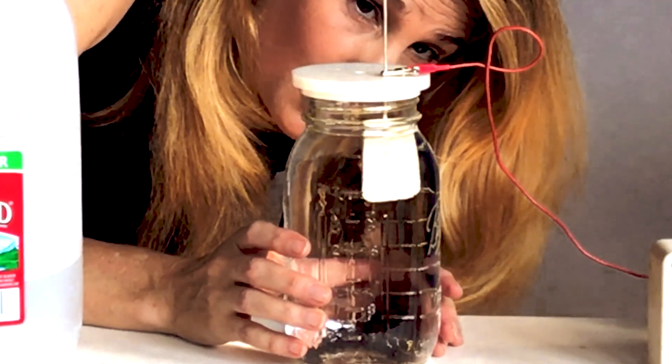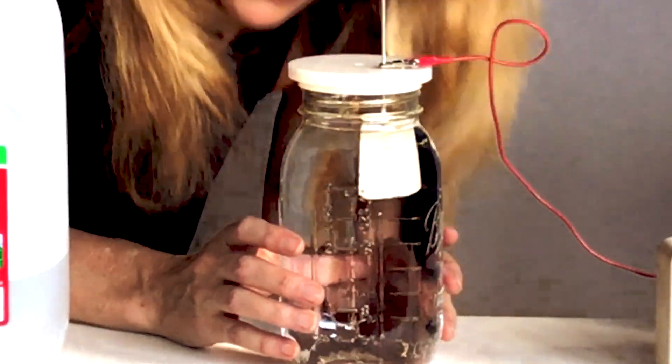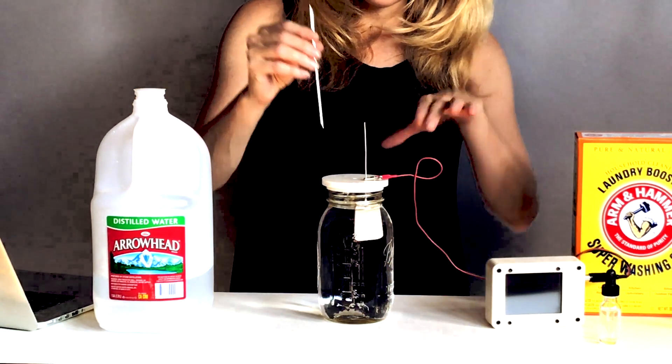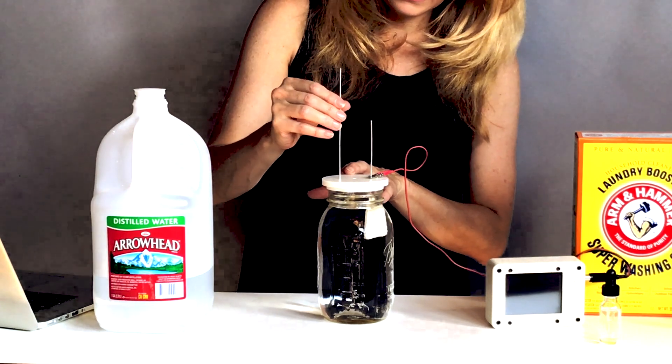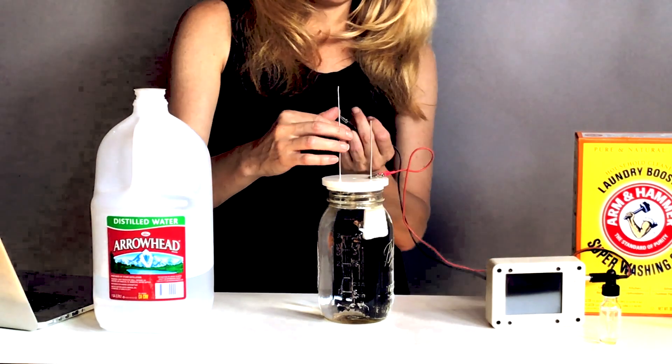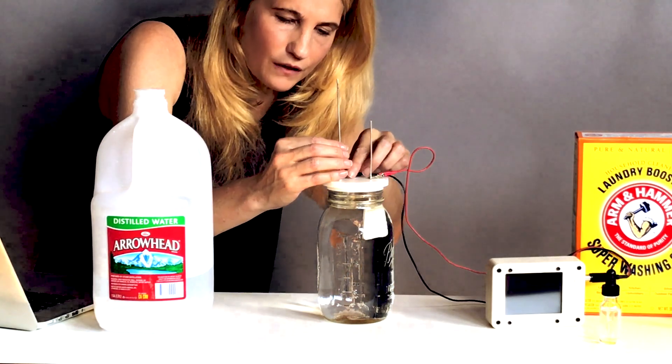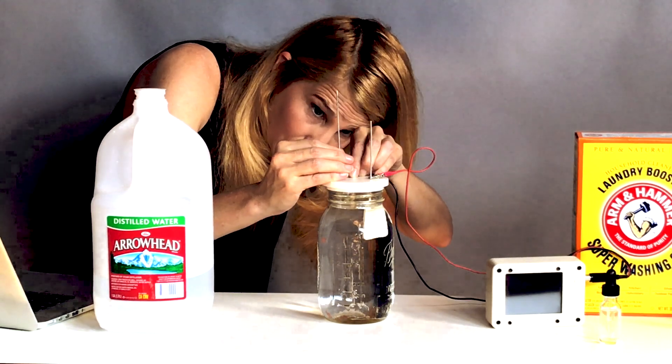Now I'm going to take my silver cathode and put it in the other hole on the other side and secure it with my black wire. And I want no more than one quarter to half an inch to be submerged, so I'm going to push it down. That's about right there. Now it's ready to go.